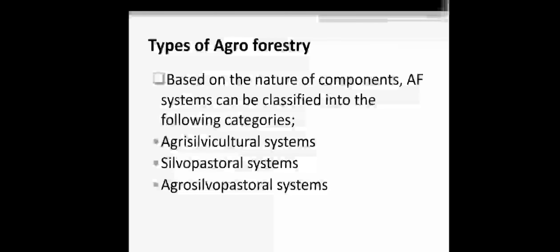Types of agroforestry. Based on the nature of components, agroforestry systems can be classified into the following categories: agro-silviculture system, silvopastoral system, and agro-silvo-pastoral system.